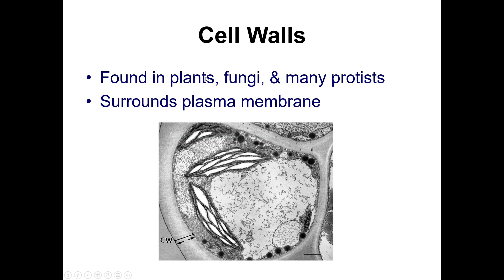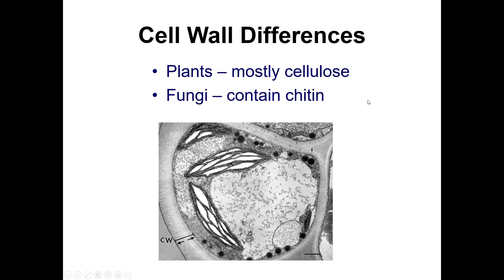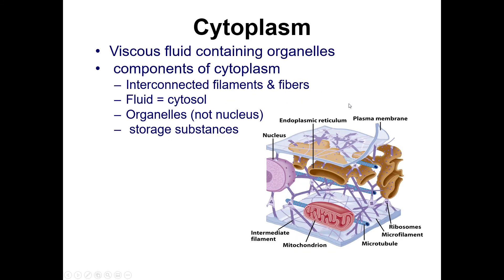Cell walls are found in plants, fungi, and protists, surrounding the membrane we just discussed. Plants have the membrane but also a much thicker, harder-to-penetrate cell wall. What they're made of varies by organism — plants use mostly cellulose, while fungi use chitin. The cytoplasm is the viscous fluid that contains the organelles, along with various filaments, fibers, and fluids. The organelles float in this cytoplasm.